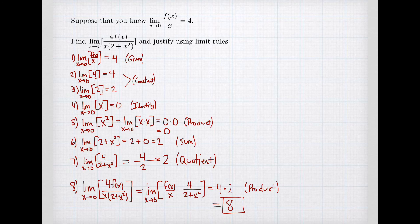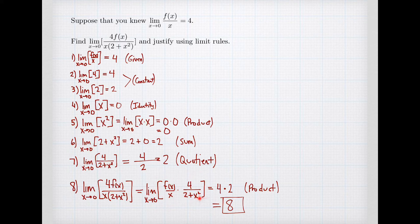To recap: we looked at the formula whose limit we wanted to find and thought about how it is constructed from elementary pieces. Using those elementary pieces, we started with limits we knew — either given to us, or limits of constants, or the limit of the identity function. Then we went step by step, building up x², then 2+x², then 4/(2+x²), combining with f(x)/x to reach our final limit of 8. Because each step is justified by a limit rule, this constitutes a proof.